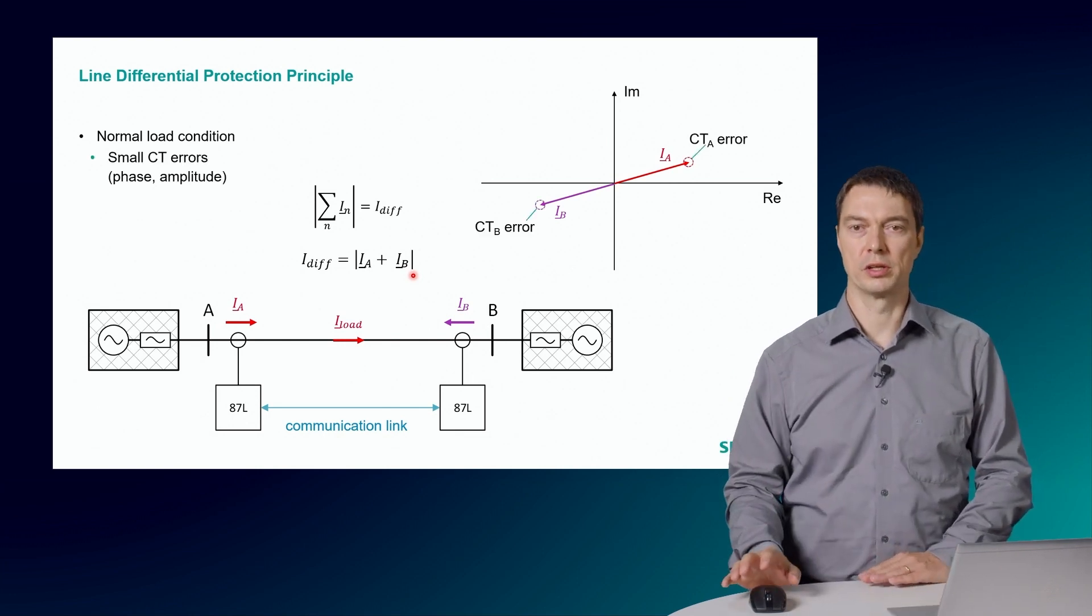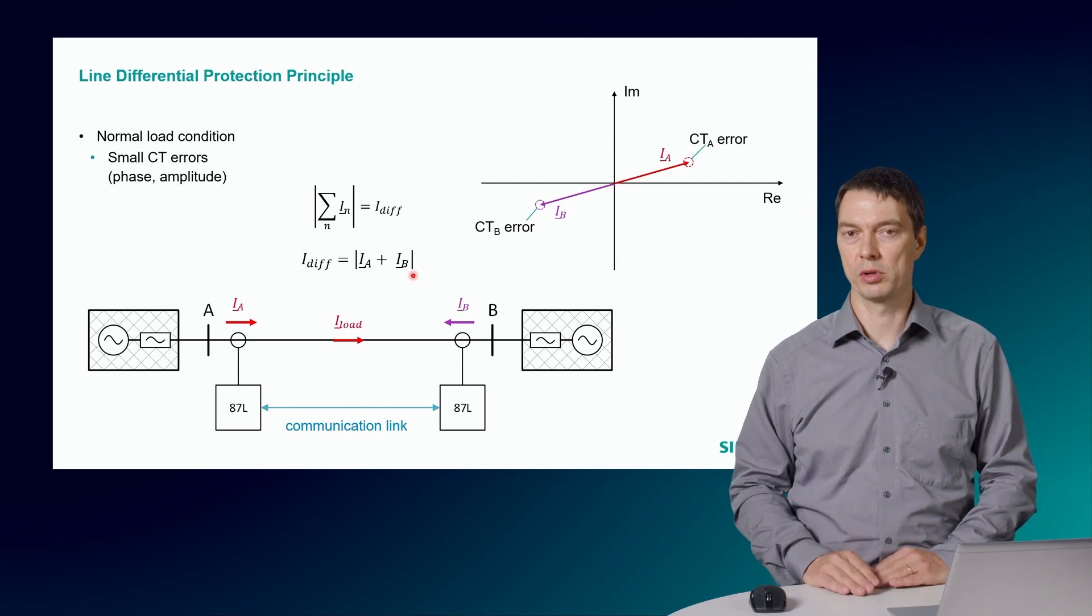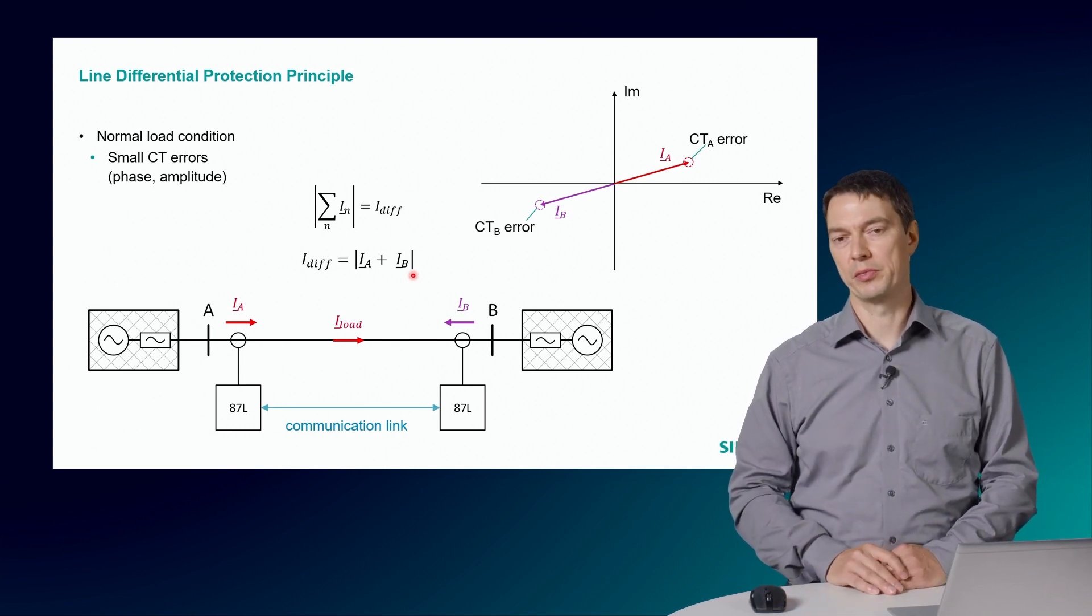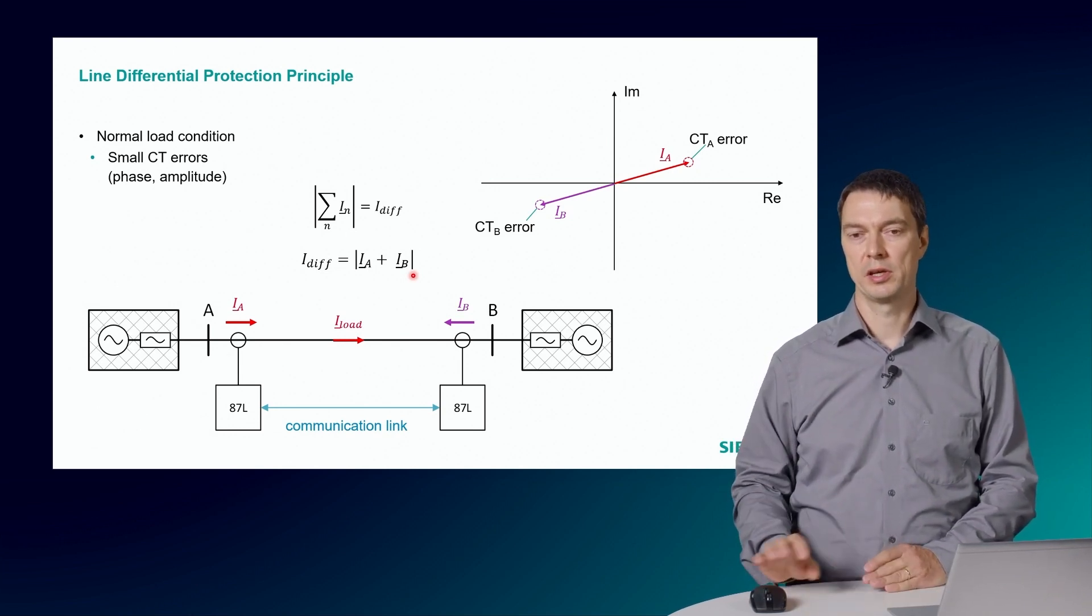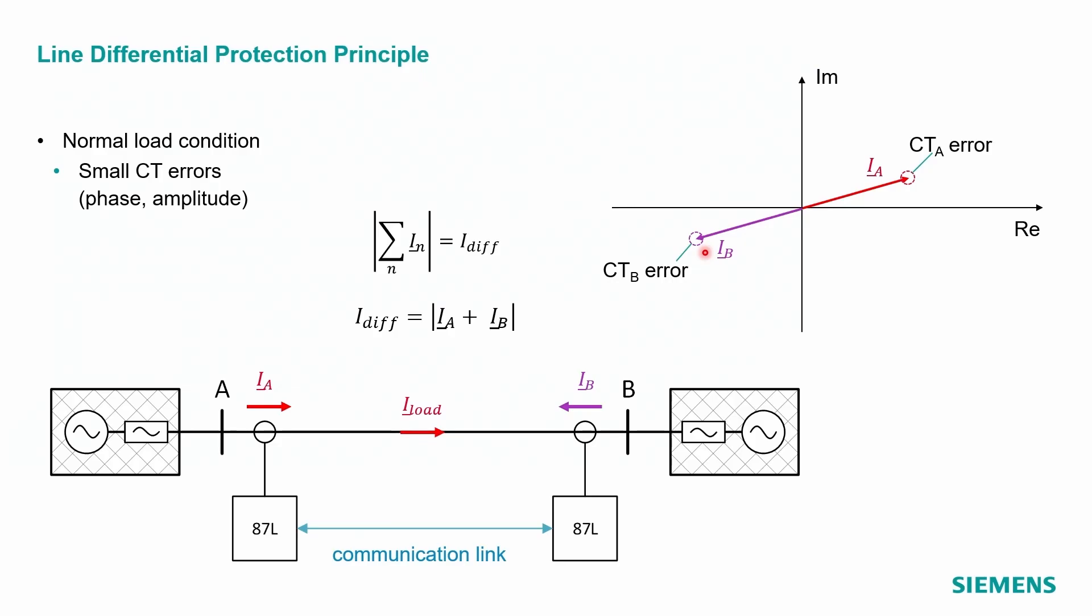This is the ideal condition. In reality, the CTs will have some small errors, which will result in an error in the amplitude in the phase, which is shown in the figure here with some small circles on the top of these phasors. The differential current as the sum of both current phasors will result in a very small differential current. The small differential current needs to be considered in the relay settings.